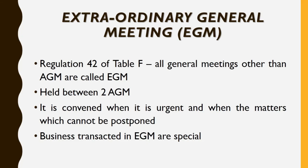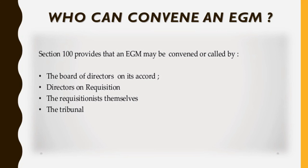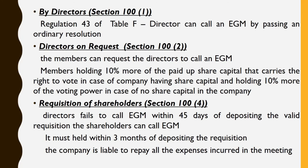Next is the Extraordinary General Meeting, i.e. EGM. Under Regulation 42 of Table F, all general meetings of a company other than annual general meetings are called Extraordinary General Meetings. It is held between two annual general meetings and is convened when urgent matters should be discussed or urgent decisions should be taken. The business transacted in EGMs are always special businesses. Under section 100, an EGM can be convened by the board of directors, directors on requisition, the requisitionists themselves, or on the requisition of shareholders, and the last one is the tribunal. The directors can call an EGM by passing an ordinary resolution.